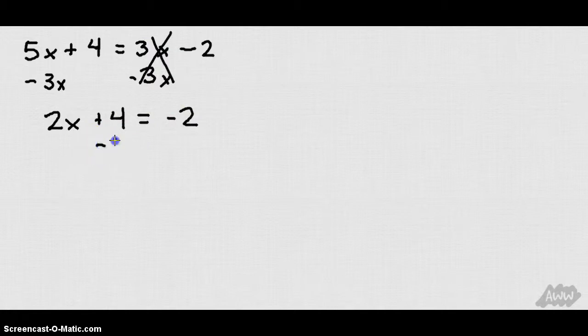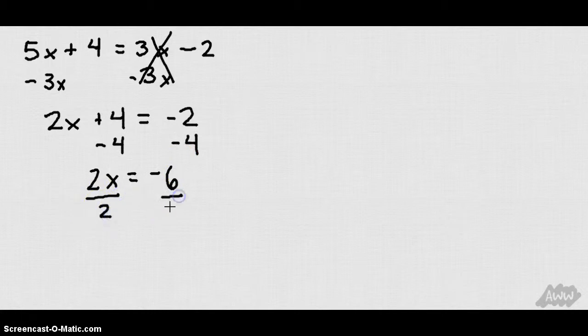Now let's take 4 from both sides. We get 2x equals negative 6, since we're taking negative 2 minus 4. Now let's divide by 2 to get that variable x by itself. Remember we're solving for x here.